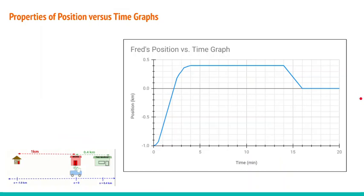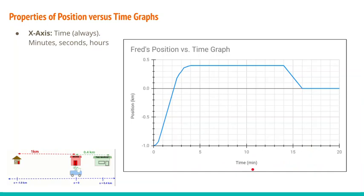This is a position versus time graph that describes his motion. On a position versus time graph, the x-axis is always going to have time on it. The units could be minutes, seconds, or hours, but it's always time. That comes from the title of the graph — position versus time. What comes first, position, is what goes on the y-axis, and after the versus is what goes on the x-axis. So time has to be on the x-axis.